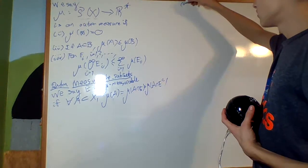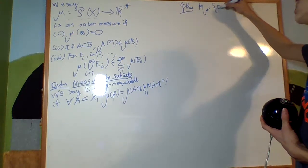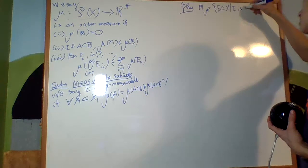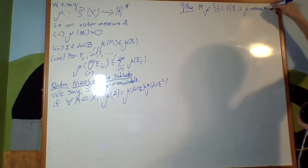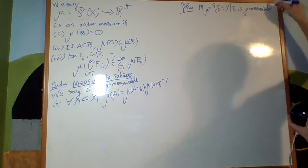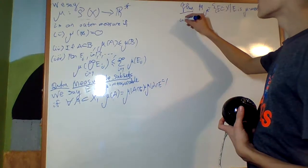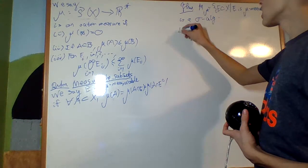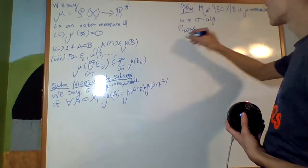Theorem. M_mu equal to the set of all E subset of X such that E is mu measurable. The set of all mu measurable sets is a sigma algebra. Proof. We're gonna need to go through the checkpoints.